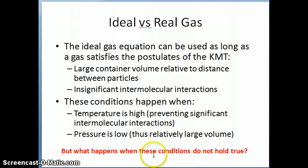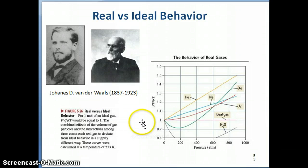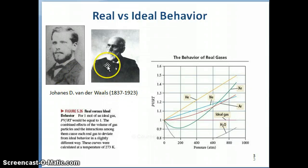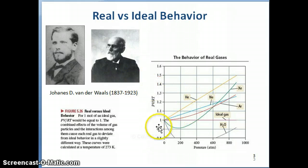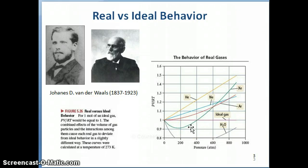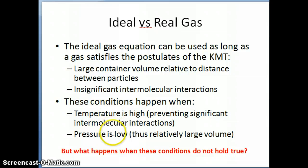The question is, what happens when we don't have these conditions — when we have low temperature and high pressure? This was studied by Johannes van der Waals back in the late 1800s and early 1900s. You can see it in the graph here comparing the behavior of gases at the ideal condition — high temperature, low pressure — versus what we refer to as the real condition, which is the low temperature, high pressure condition.